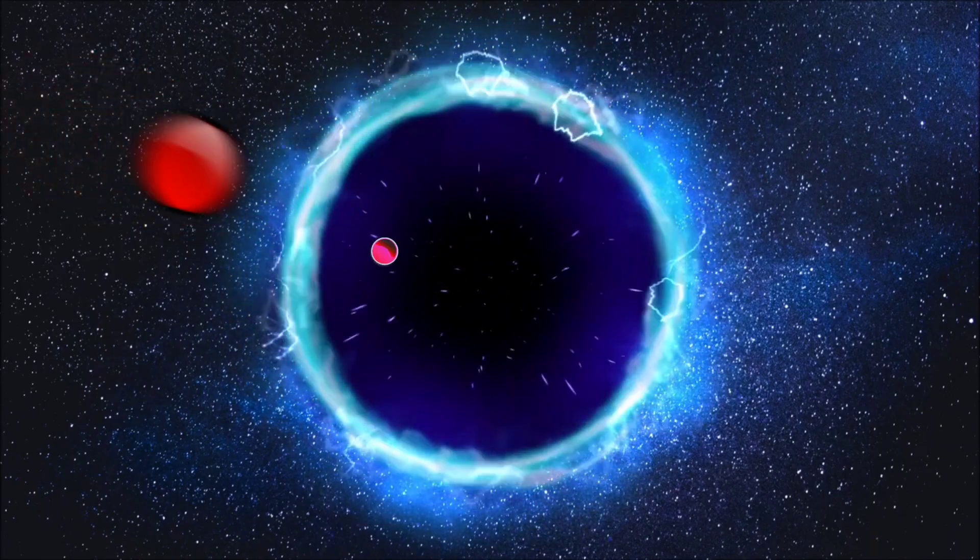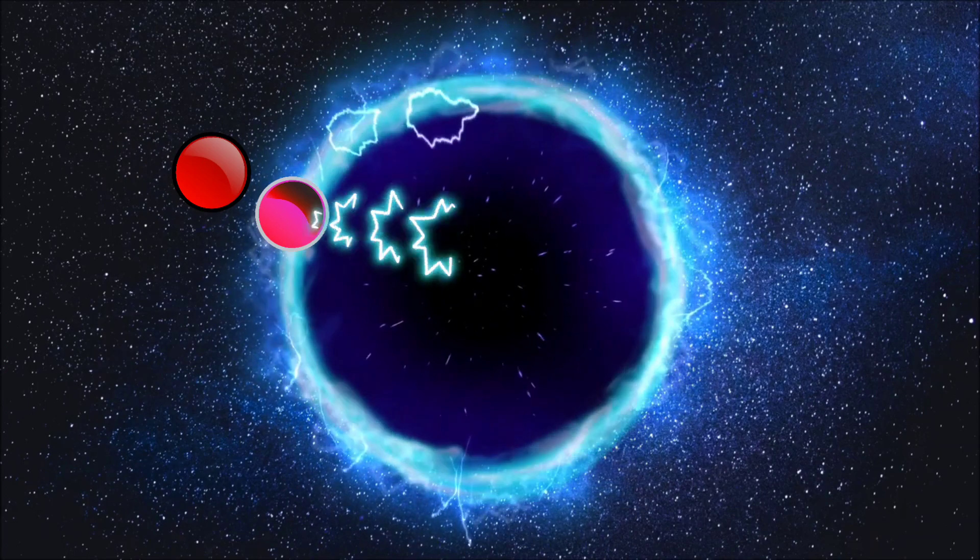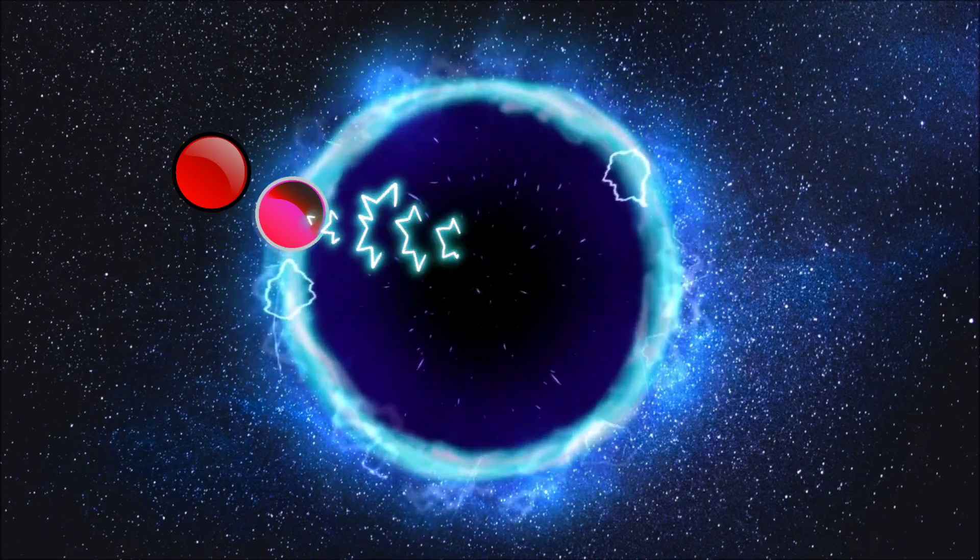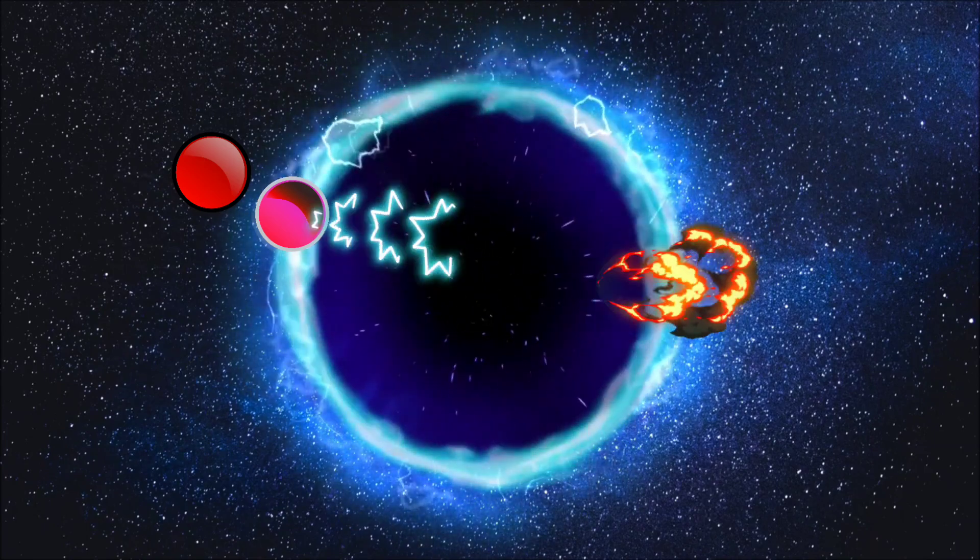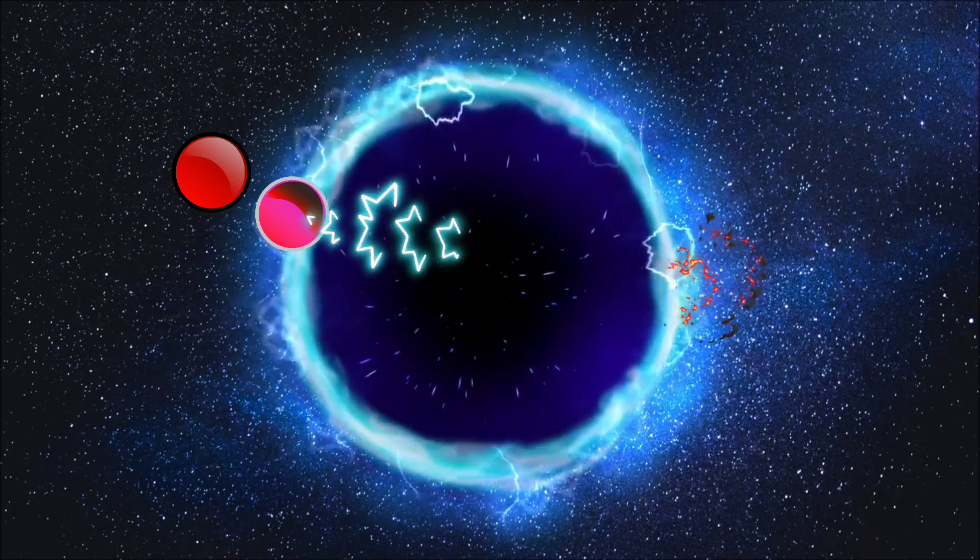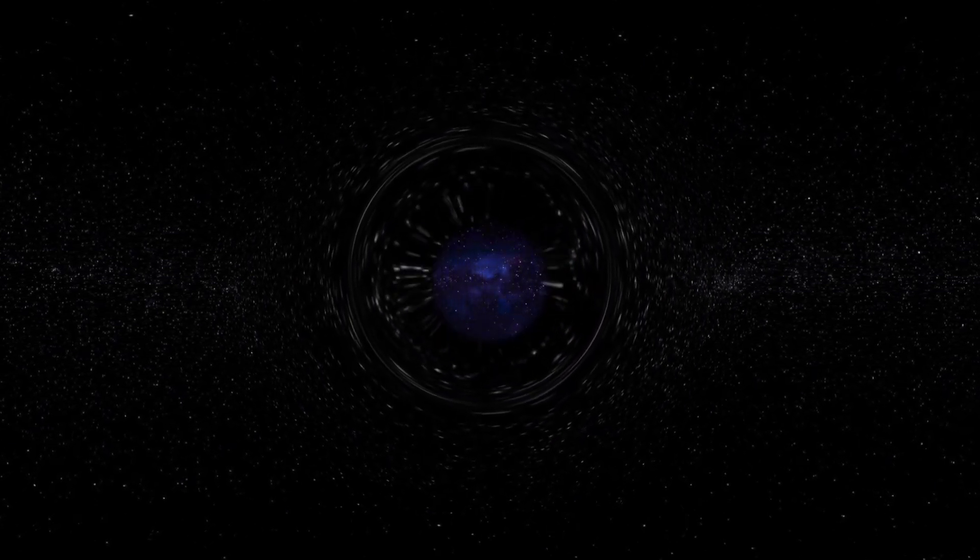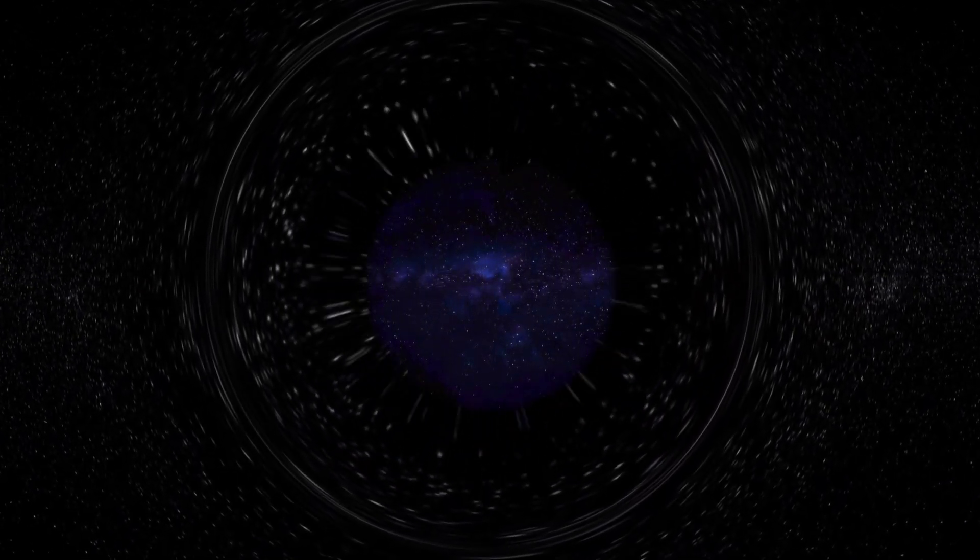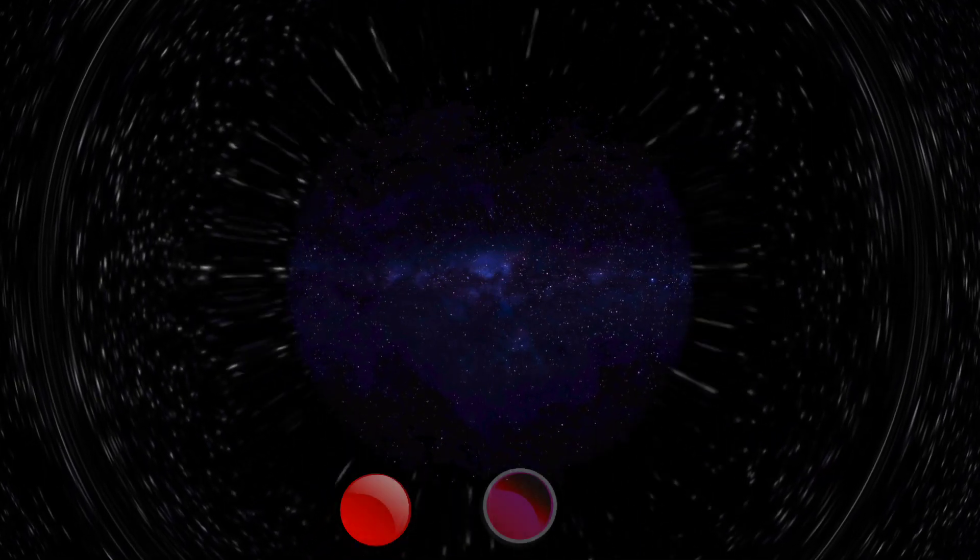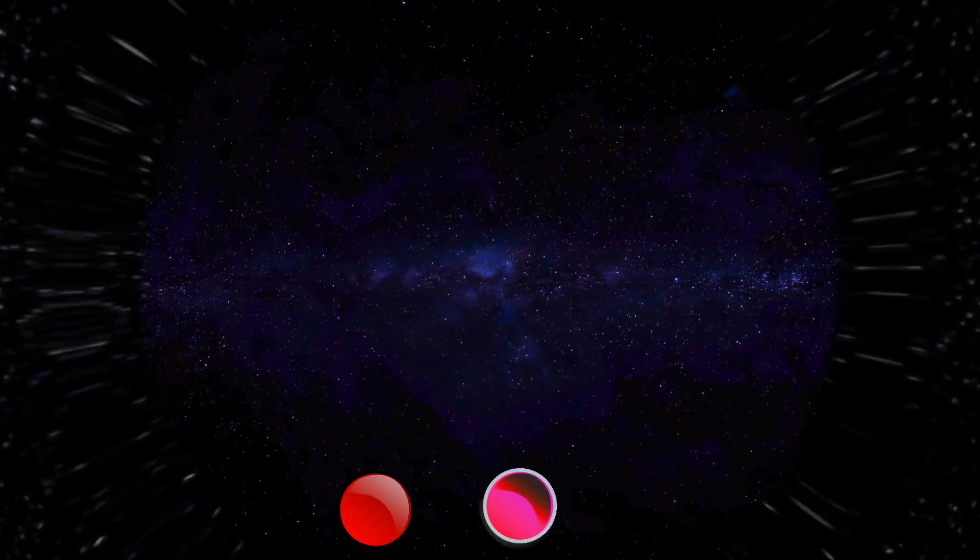The energy needed to create these particles is borrowed from the black hole's gravitational field, causing it to lose a tiny amount of mass. This process, known as Hawking radiation, is akin to a black hole's evaporation. As the black hole radiates energy through the escape of particle-antiparticle pairs, its mass gradually diminishes.